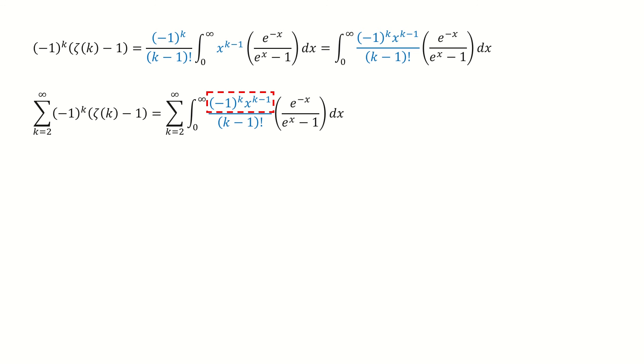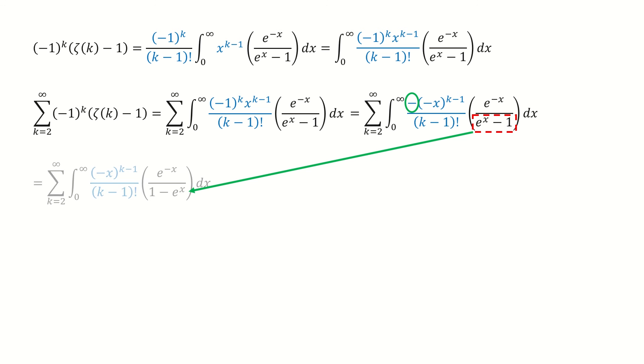Note for this term inside this red box, this term can be written into this way. We take negative sum out, and then we merge the negative one and x inside the parentheses. Note for this negative sign on the numerator, we will use this negative sign to switch the denominator. So the denominator becomes 1 minus e to the power x.